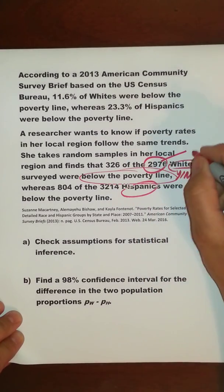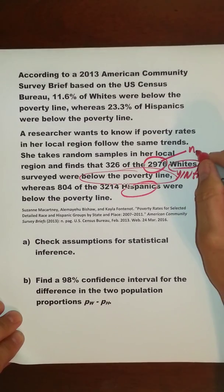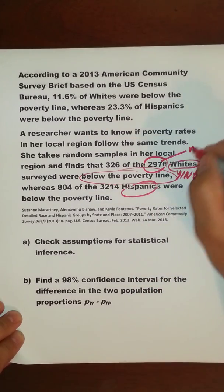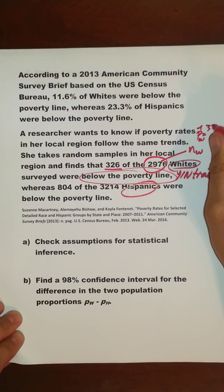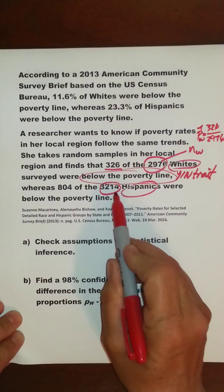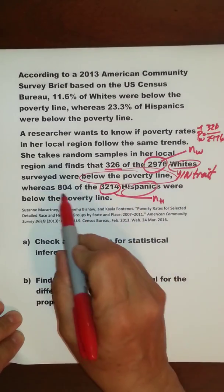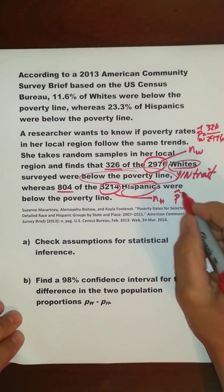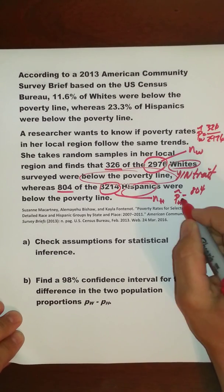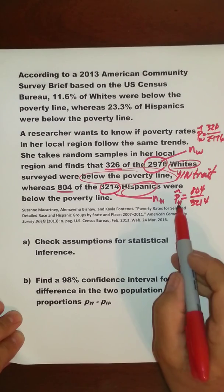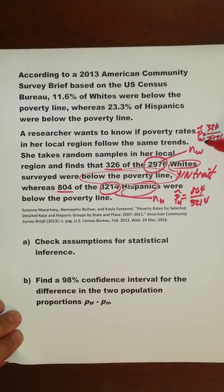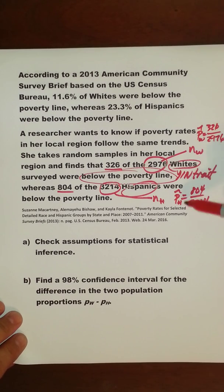In this case, this is the sample size N for the whites. The p-hat, or the sample proportion for whites, would be 326 out of 2,976. And then for Hispanics, you have the sample size for the Hispanics, and 804 over 3,214 is the sample proportion for Hispanics. You really do want to use subscripts that are pertinent to your particular scenario rather than just using 1 and 2.